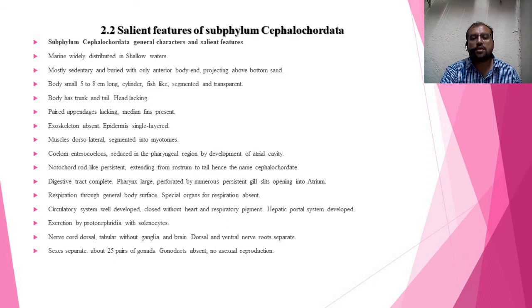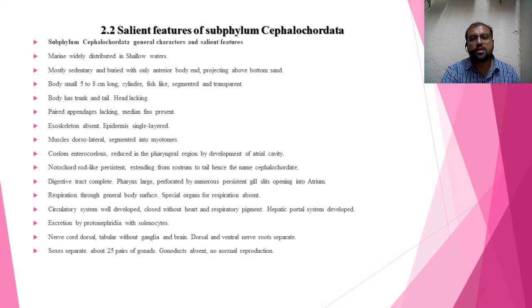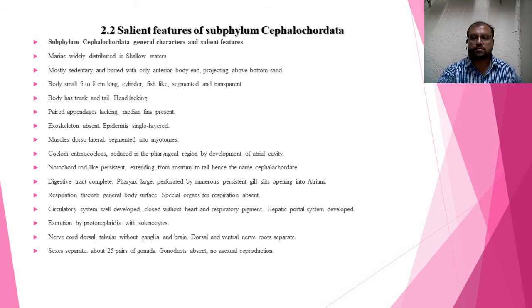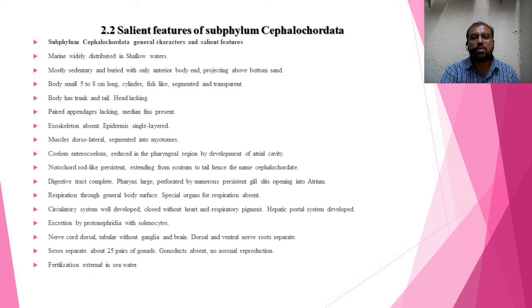Sexes are separate; about 25 pairs of gonads are present. Gonoducts are absent and there is no asexual reproduction. Both male and female produce their respective gametes. Fertilization is external in seawater — though sexes are separate, gametes are released outside the body to increase the chances of fertilization and they get fertilized outside the body in seawater.